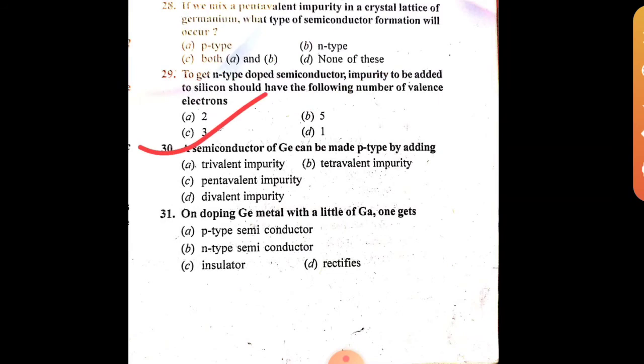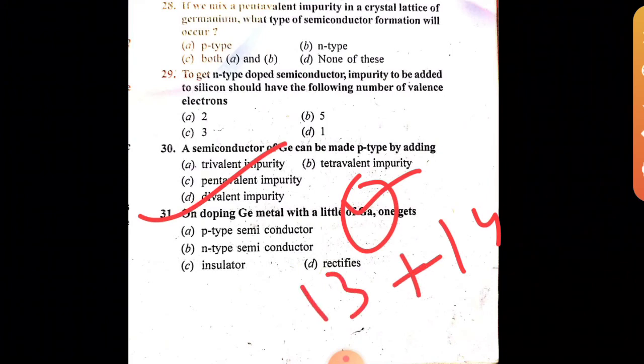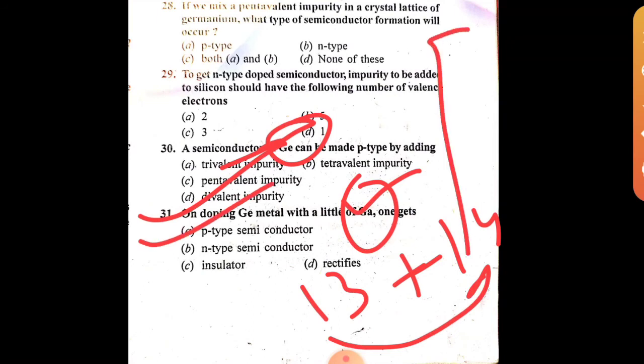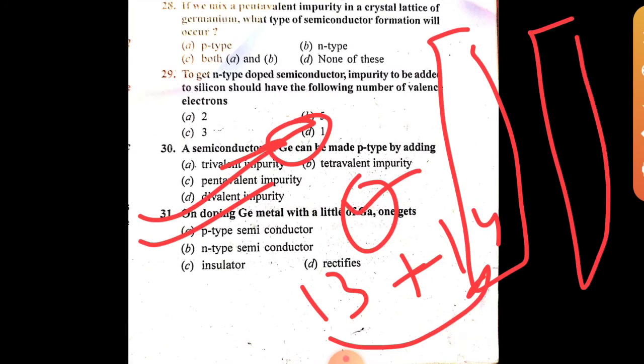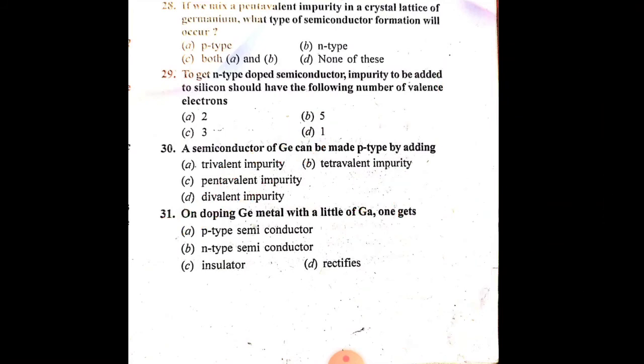Question 30: A semiconductor of germanium can be made by adding trivalent impurity. Question 31: On doping germanium metal with gallium - germanium is group 14, gallium is group 13 with trivalent properties - we get p-type semiconductor. You need to know all group 13, 14, and 15 elements from the periodic table.